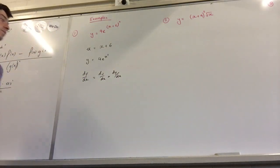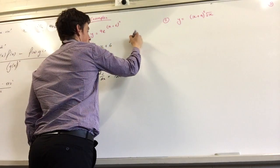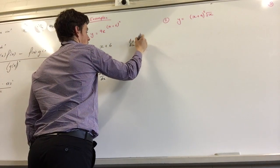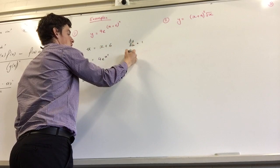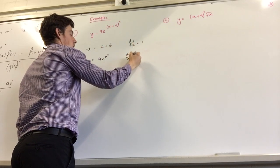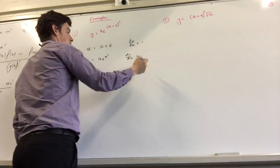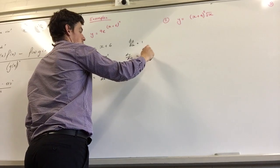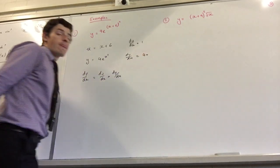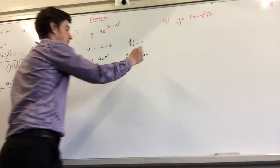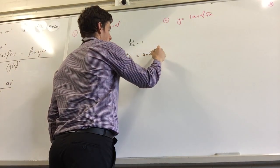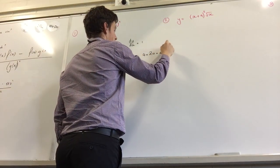So can I derive u? du/dx equals 1. dy/du equals 4 times 2u times e to the u squared. Very good, derivative of the power.